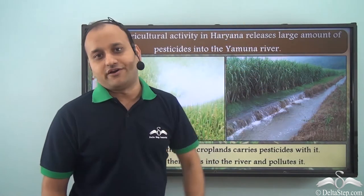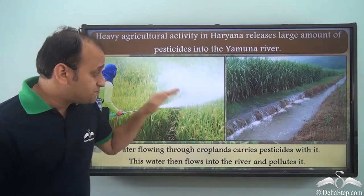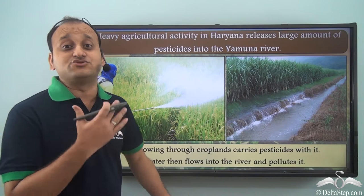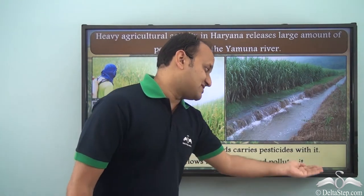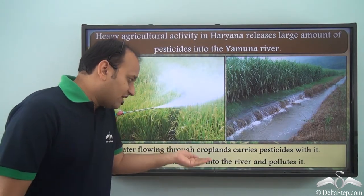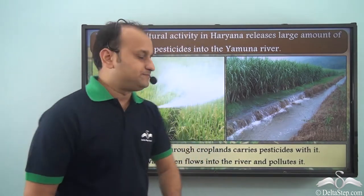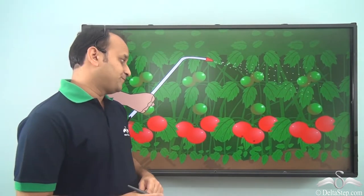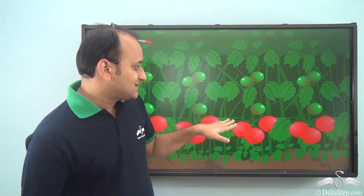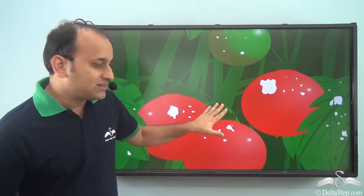Pesticides sprayed on crops finally flow into the river, polluting it. Water flowing through croplands carries pesticides with it, and this water then flows into the river. Farmers usually spray pesticides on their crops to get rid of different pests. These pesticides stick on the plants themselves, and when rainfall occurs, something important happens.